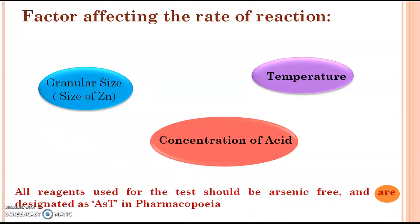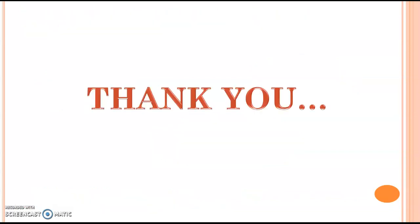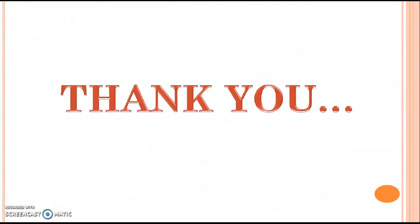The reagents used for the test should be arsenic-free and are designated as AST in the pharmacopoeia. This AST indicates that whatever reagents you use are free from arsenic impurity. Thank you.